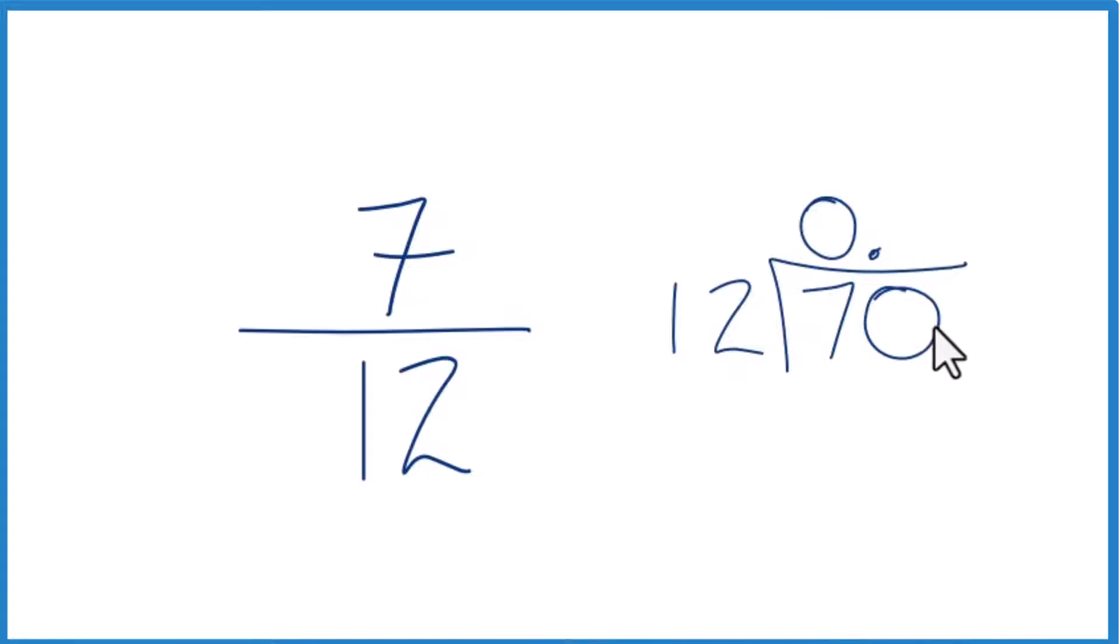6 times 12 would be 72. That's too much. How about 5 times 12? 5 times 12 is 60. So we subtract and we get 10 left over.